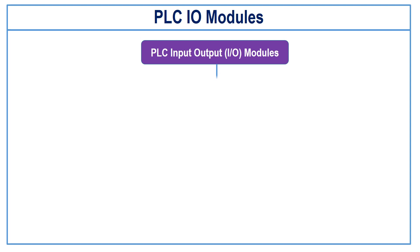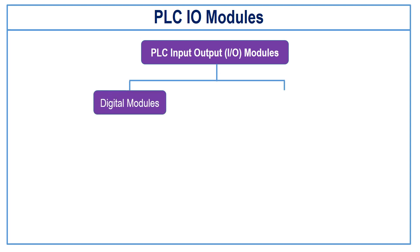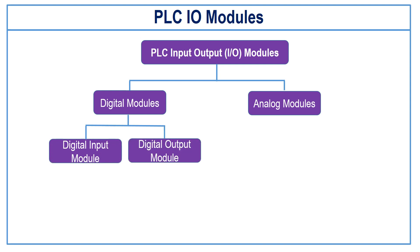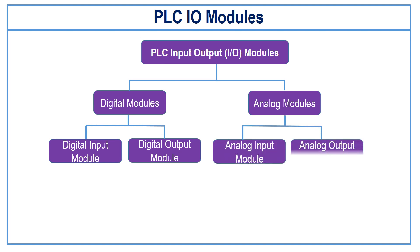There are two types of IO modules: digital modules and analog modules. The digital modules can be categorized as digital input modules and digital output modules. The analog modules also can be categorized as analog input modules and analog output modules.